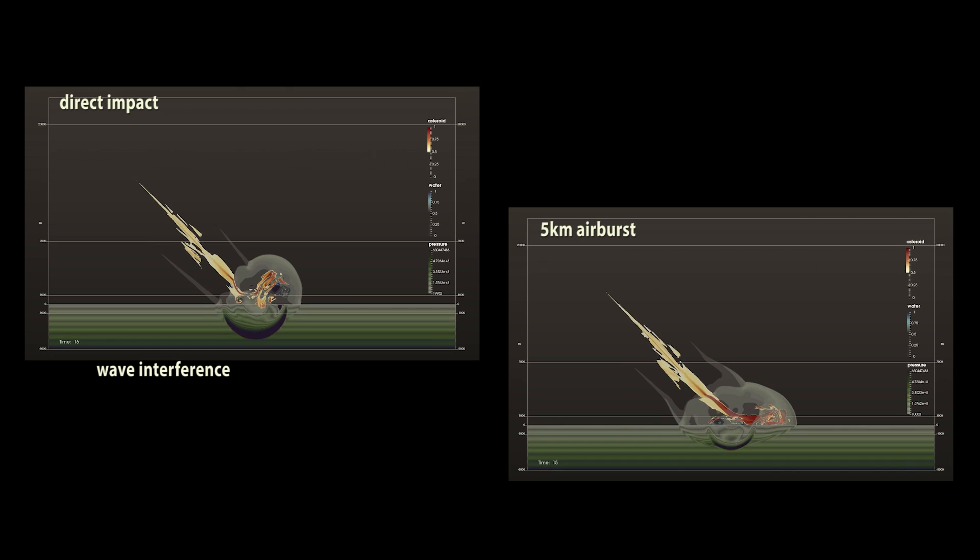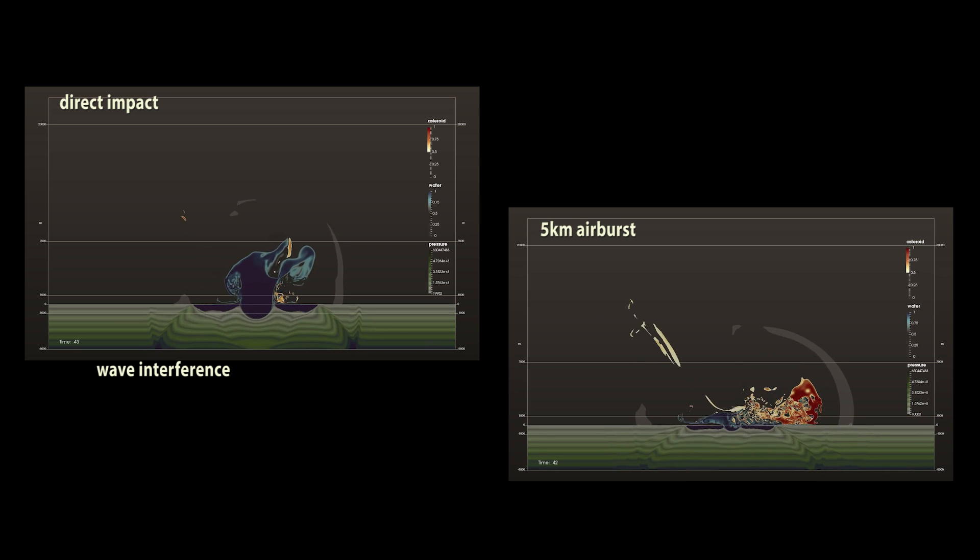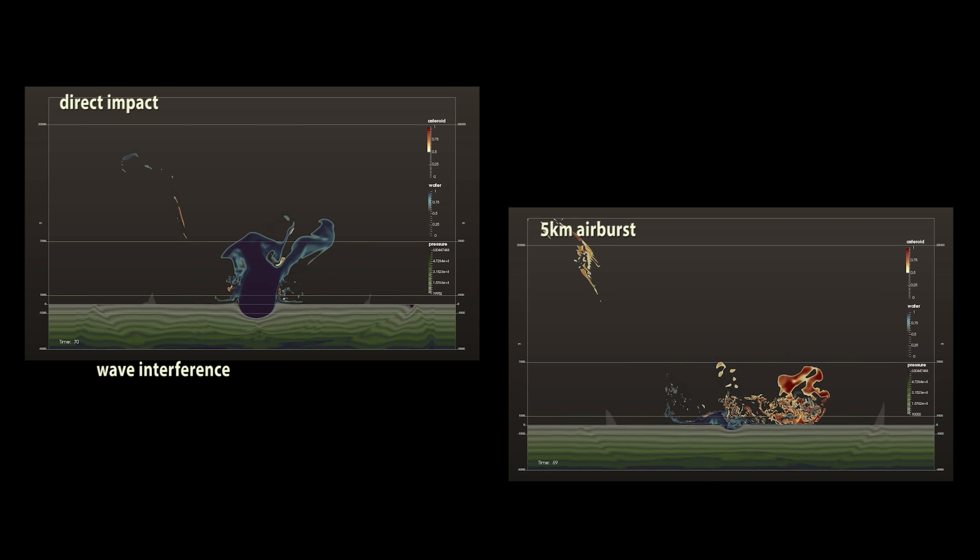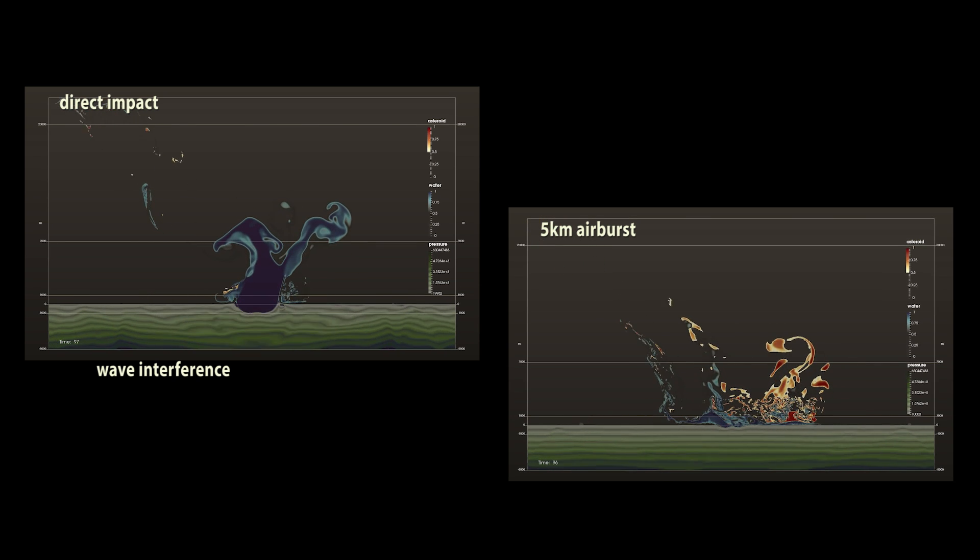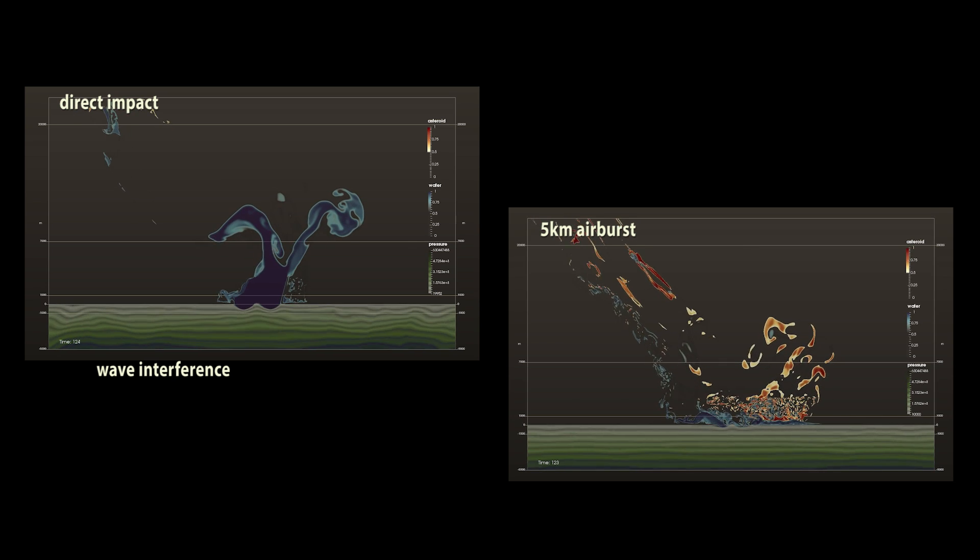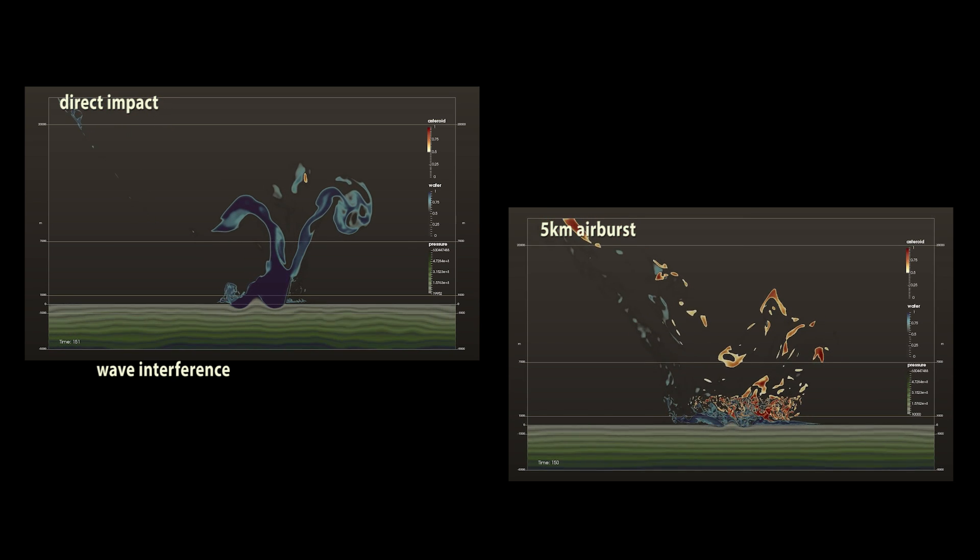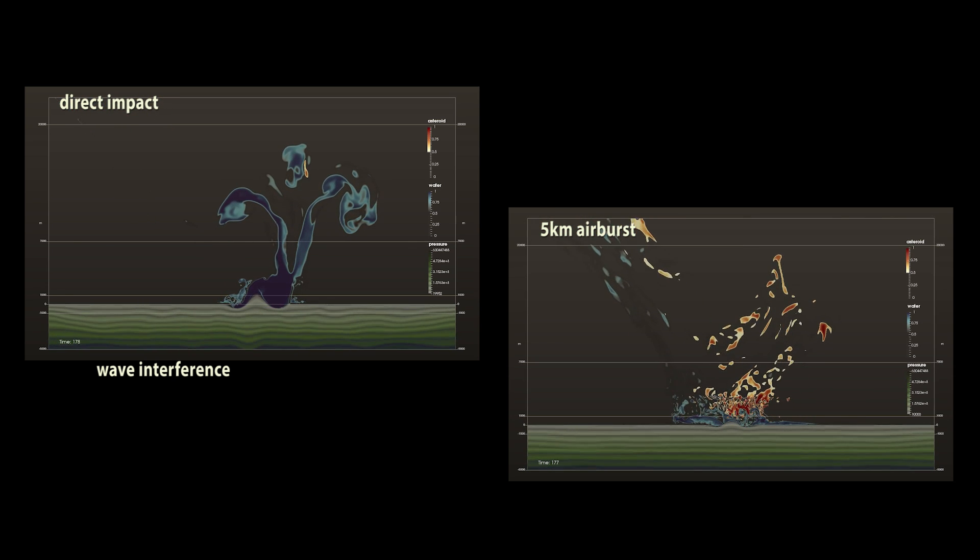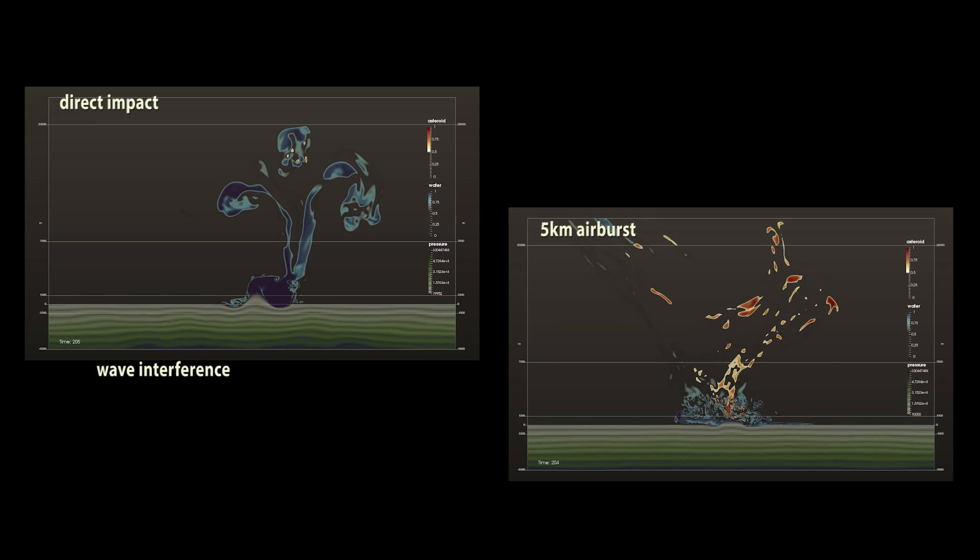Interestingly, there is a stronger wave interference in the direct impact simulation, but such an impact is more likely to create a tsunami because of the greater height of the splash. This may indicate that a tsunami is more likely to be formed during a direct impact than an airburst.